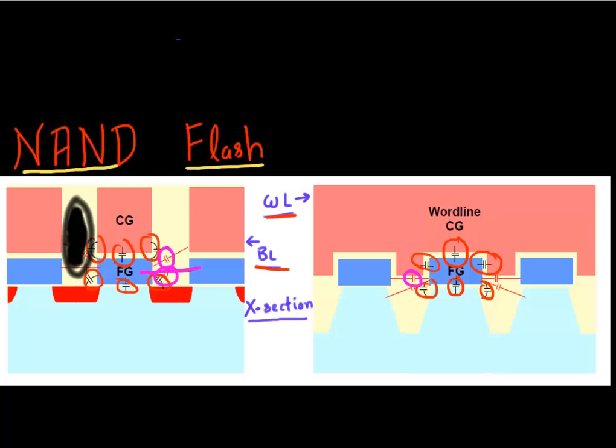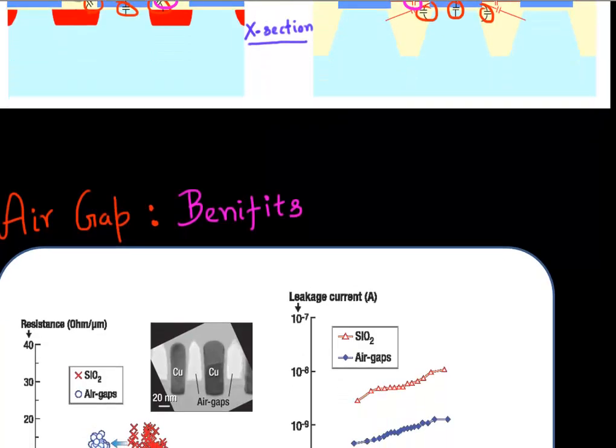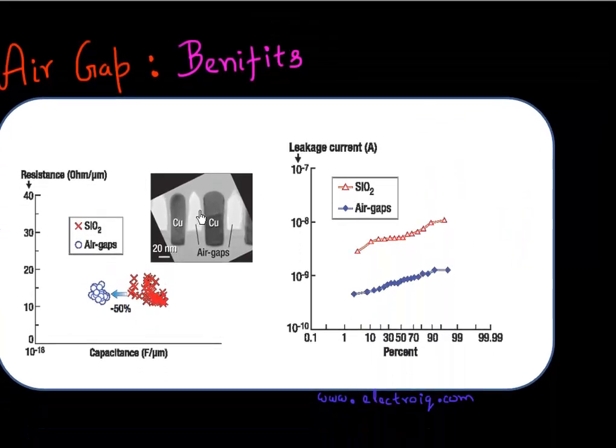And next I want to show you some experimental data on what actually happens if you put an air gap. So here's an example where people tried to introduce air gap between two adjacent copper lines in the back end of the line process flow. And you can see that it reduces your capacitance between these two lines by 50%. While the resistance, of course, remains the same because we did nothing to these copper wires.